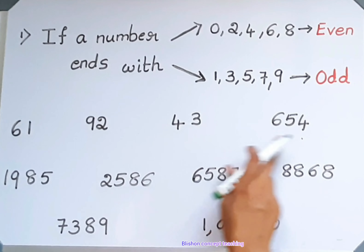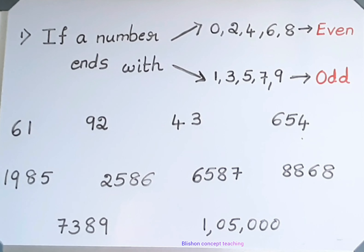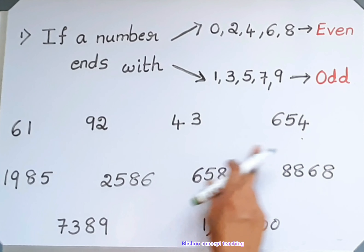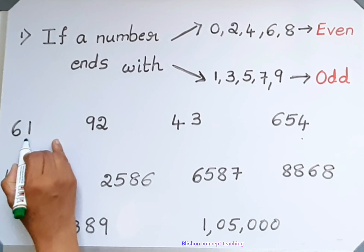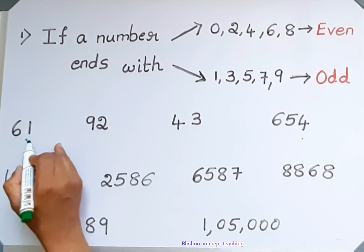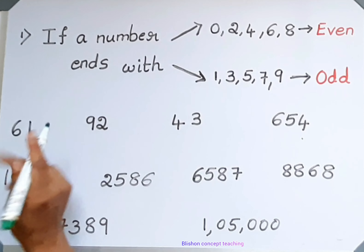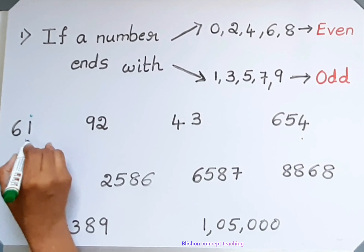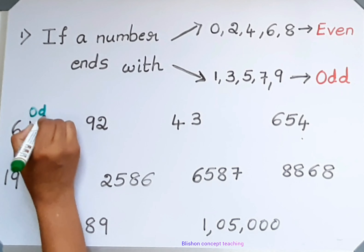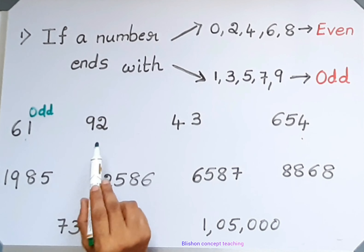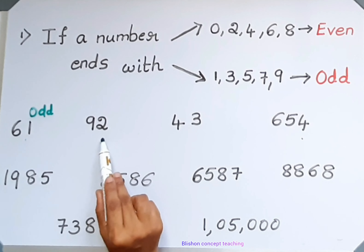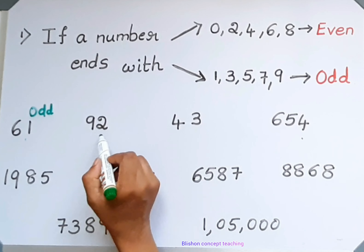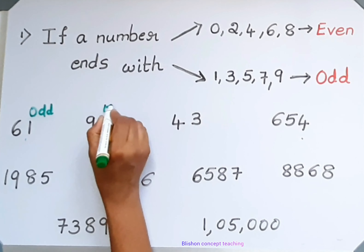Here we have a list of numbers. We have to identify whether these numbers are even or odd. The first number is 61 and it ends with 1, so it is an odd number. In 92, the number in the unit place is 2, so it is an even number.